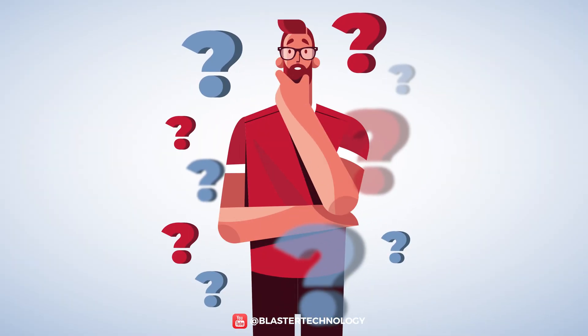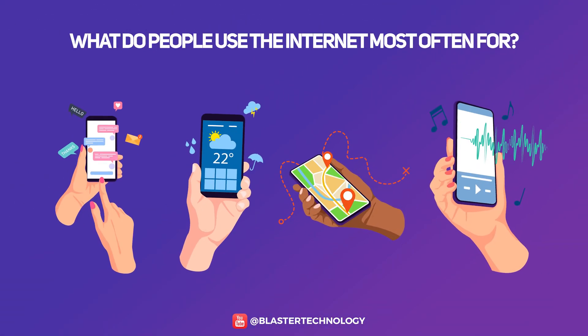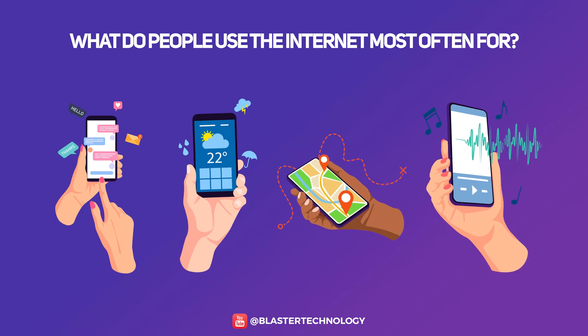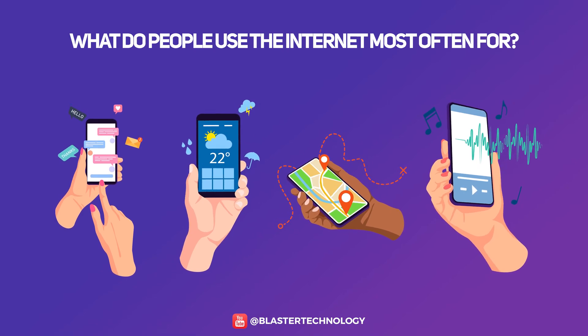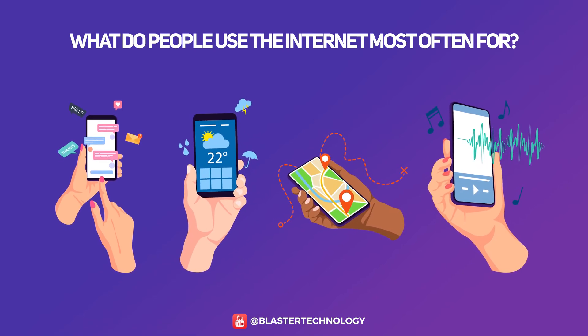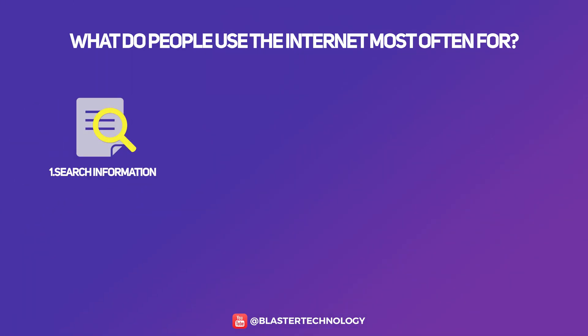Now, what do people use the internet for? Here is a list of the top 10 most used reasons or domains for surfing the internet. Number one: search information. Number two: news.